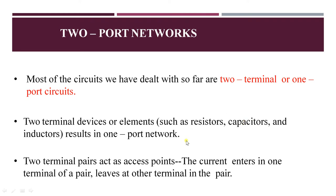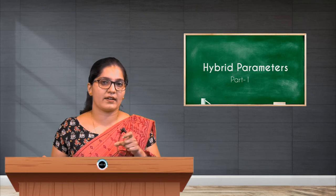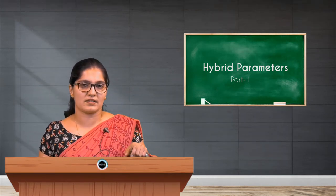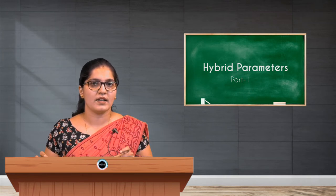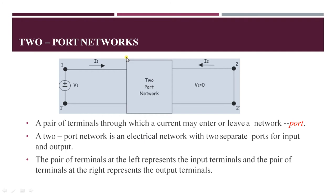Two-terminal devices or elements such as resistors, capacitors, and inductors result in a one-port network. A two terminal pair acts as access points where current enters one terminal of a pair and leaves at the other terminal — like in the case of a BJT or CE amplifier, where the emitter is made common for both input and output, so the base and emitter form the input port and the collector and emitter form the output port.